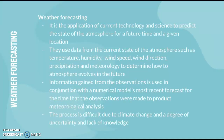Weather forecasting is the application of current technology and science to predict the state of the atmosphere for a future time and given location. Data from the current state of the atmosphere — such as temperature, humidity, wind direction, and precipitation — is used along with numerical models to determine how the atmosphere evolves. This process is difficult due to climate change and a degree of uncertainty and lack of knowledge.